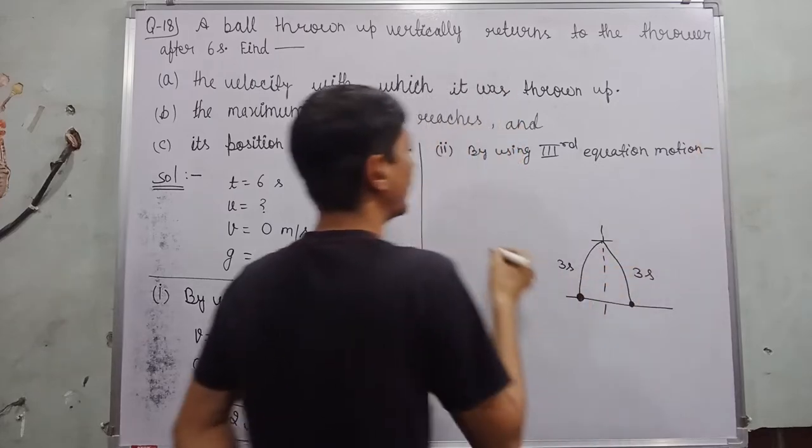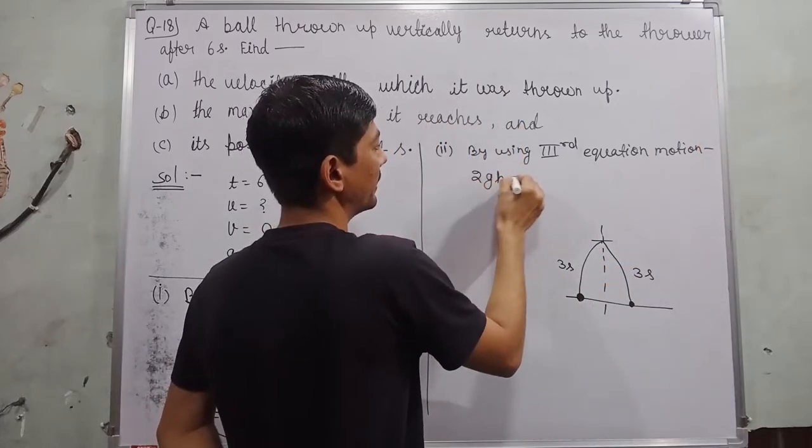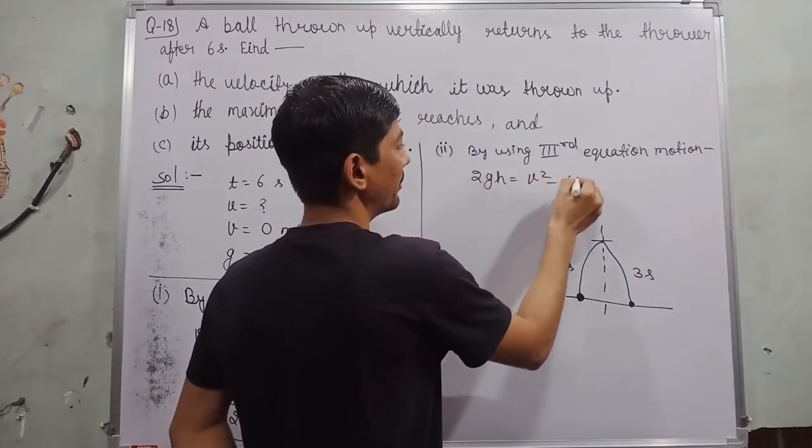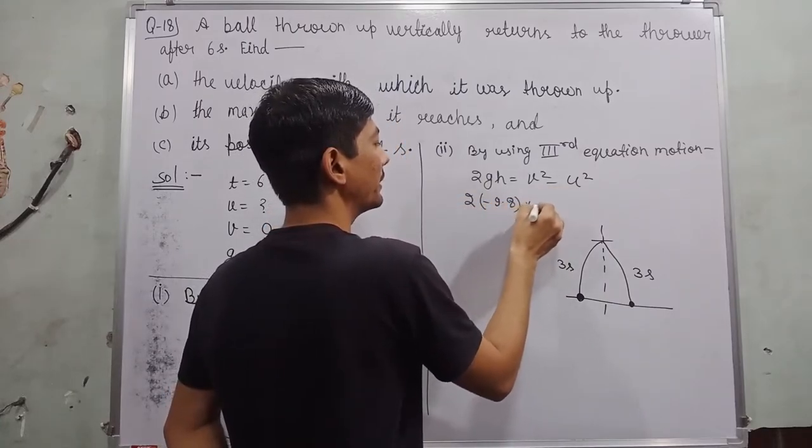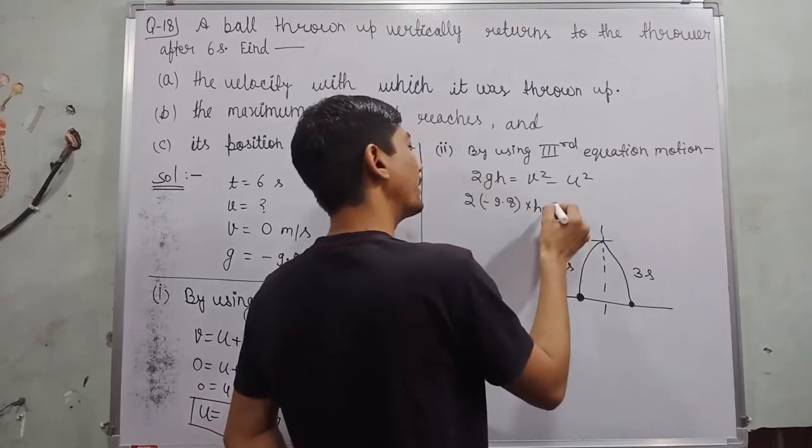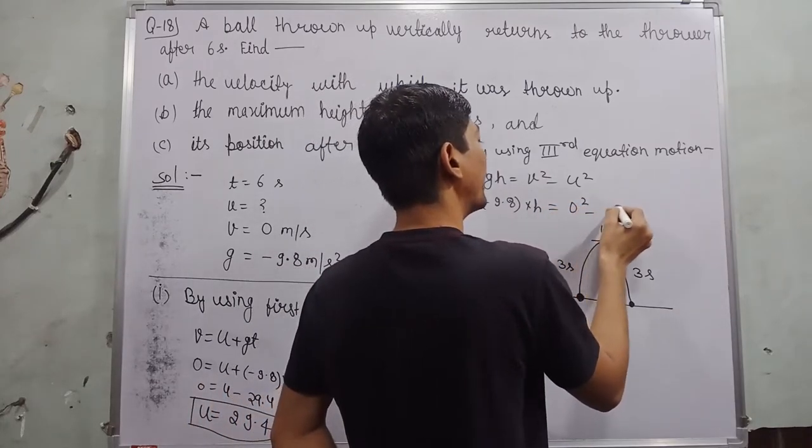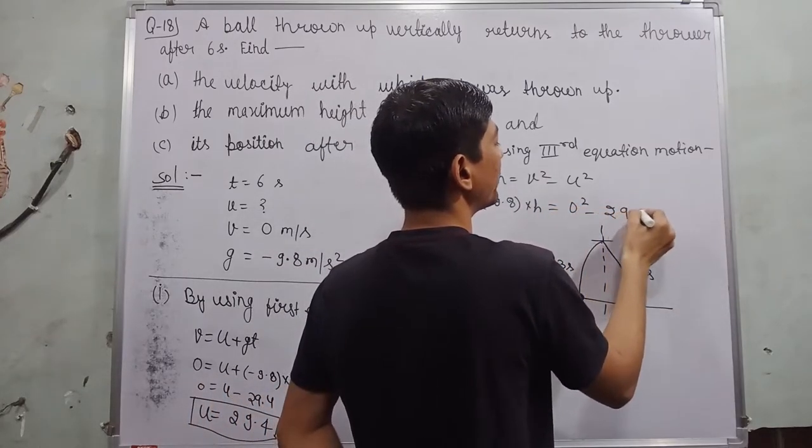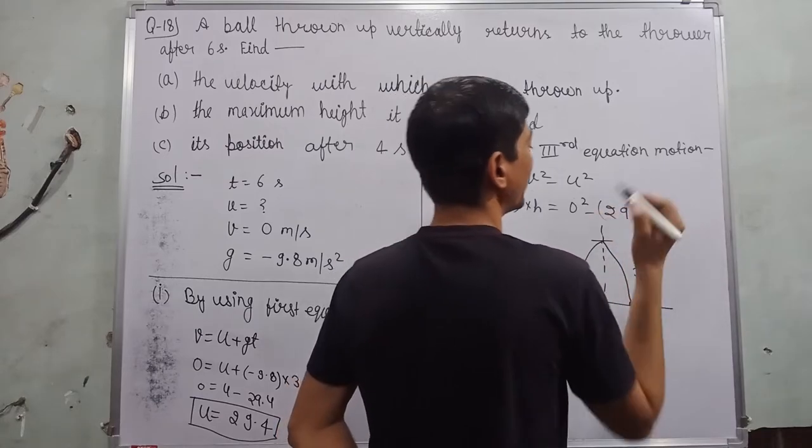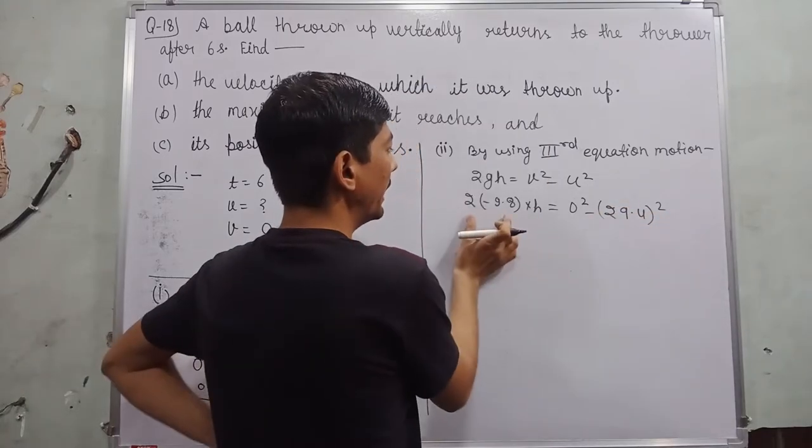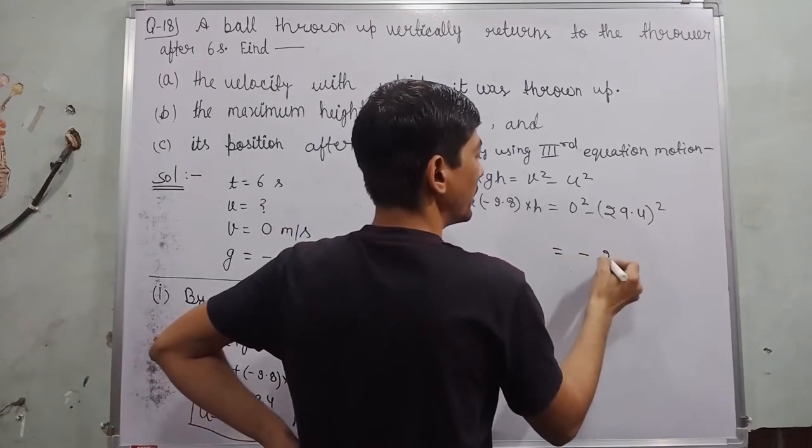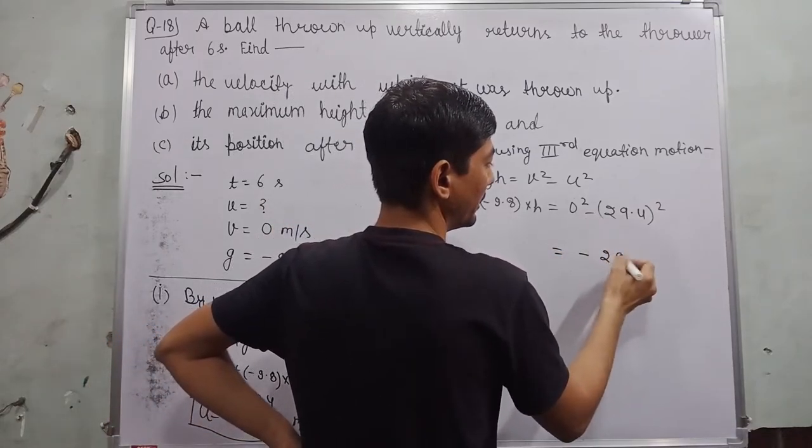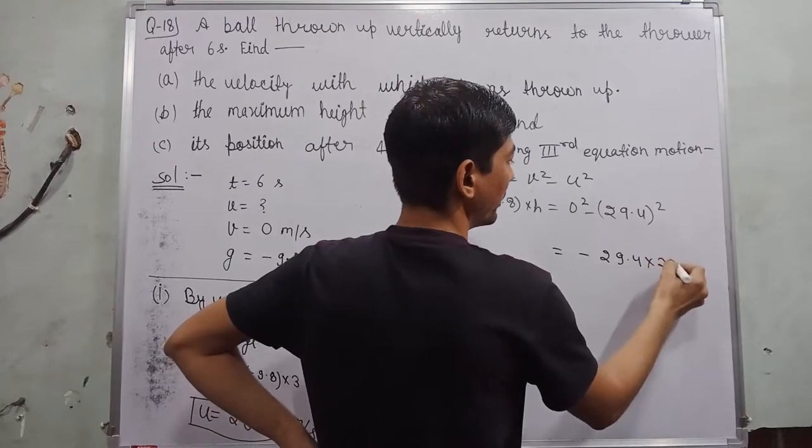I have 2gh is equal to v square minus u square. 2 into minus 9.8 h need to find out, v square 0 square minus u square 29.4 whole square. For the value of h, I send this term towards the right hand side become minus 29.4 into 29.4